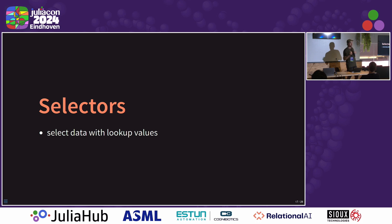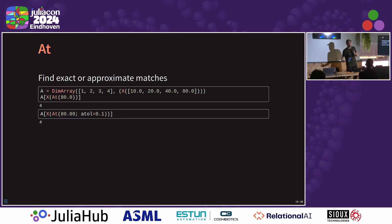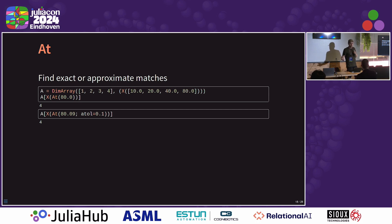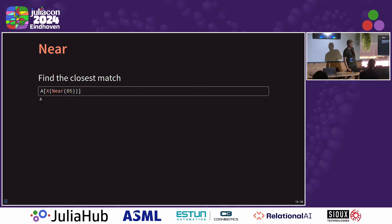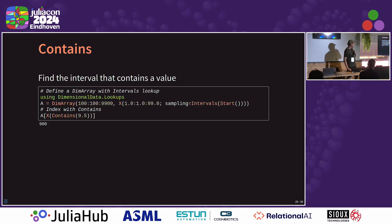The next use is to use the lookup values that we have in spatial data instead of just the names of the arrays. We want to select data using our lookup values. We have a bunch of things called selectors. The first is At. This is just the shortest word I could think of that meant this — I want a wrapper type so it's different from standard Julia indexing. So we can make an array and index into it with At. Here I'm going X At 80, meaning I want the value on the X axis where the lookup value is 80. But I can also use X At 80 with a tolerance for data that's not quite exact. There's also Near, which just finds the closest match, and Contains, which finds the interval that contains a value.